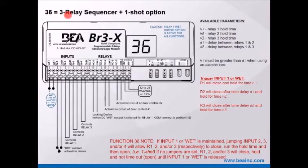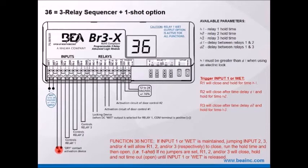Function 36 equals a three-relay sequencer with a one-shot option. Input one and ground is normally used to activate or start a sequence. The key difference on function 36 is that if you make a dead short or put a jumper on input two, three, or four, that will control relay one, two, and three respectively as a one-shot function — meaning that output will run the hold timer and expire and then relax when the hold timer is done.